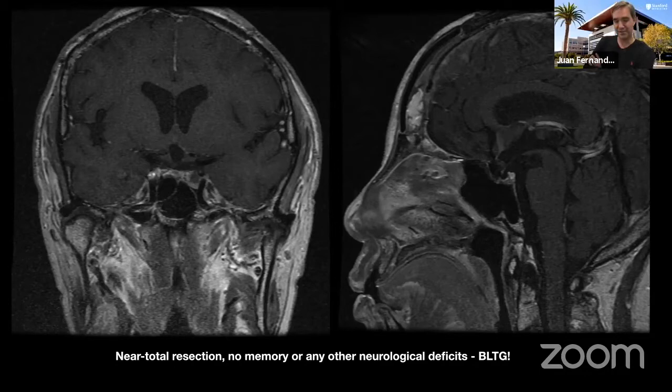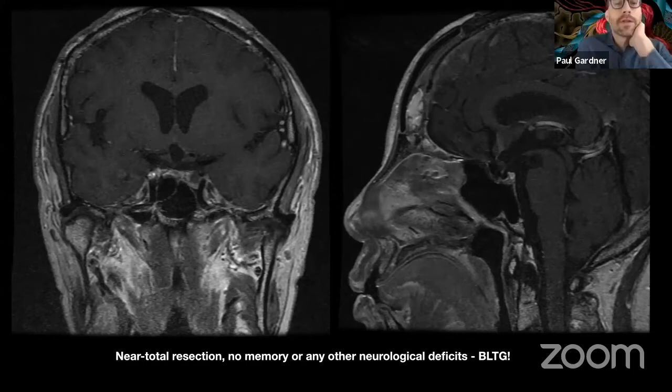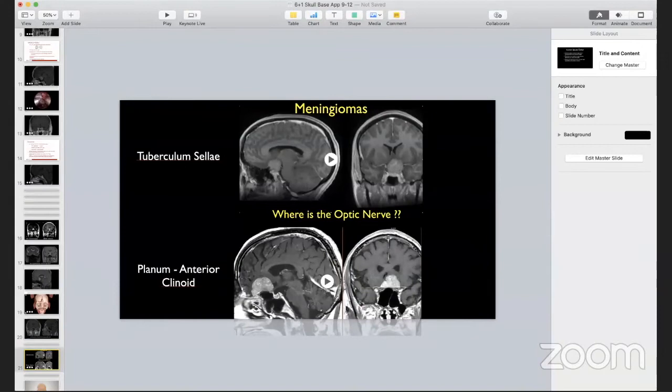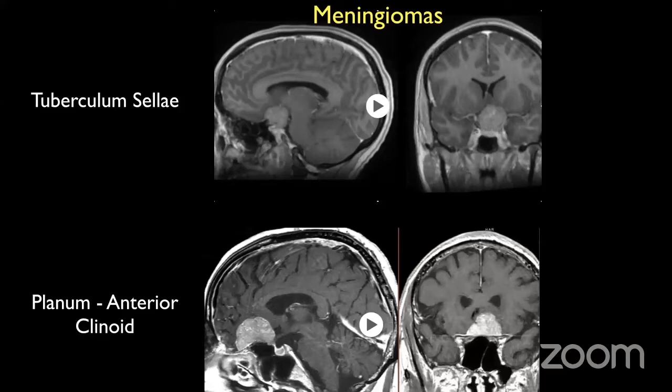Quick question — do you modify your eyebrow and ever sacrifice the supraorbital bundle to shift more medially, to get a more subfrontal approach as opposed to the more classic lateral eyebrow? That's a good question. We don't typically do that, but you certainly could as long as you tell the patient they're going to have a numb forehead for the foreseeable future. It's not a huge deficit. Getting another centimeter or so medial can make a significant difference, so it's actually a reasonable thing to do.